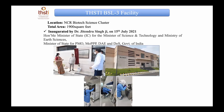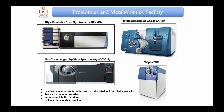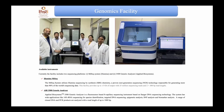We have a large BSL3 facility — perhaps one of the biggest in north India — where both viral and bacterial research can be conducted separately. We have India's first ferret facility for influenza and other viruses for which ferrets are natural hosts. We also have high-resolution mass spectrometry for proteomics, GCMS, and other high-end equipment. The genomics facility is managed by Dr. Das.